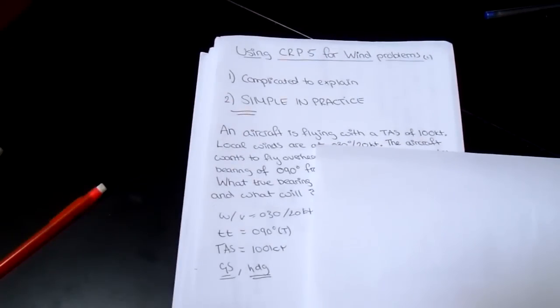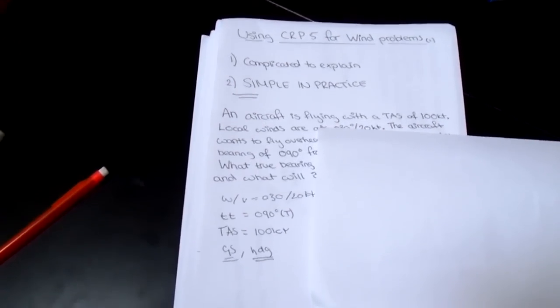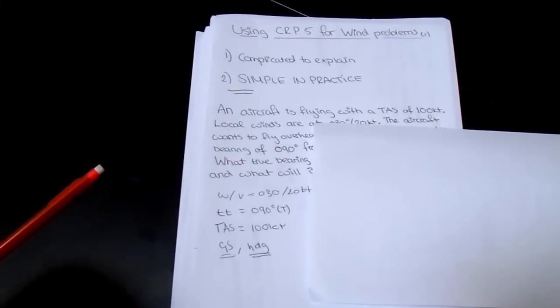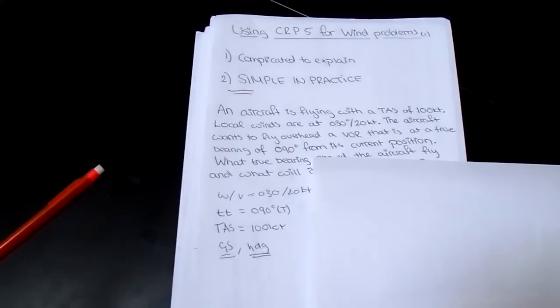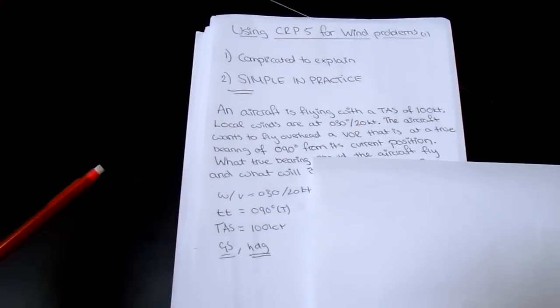So what do I mean by what true bearing should the aircraft fly? I mean, what true bearing should it fly in order to get a true track of 090 degrees to arrive over the VOR? So the first thing is to actually write down the values you need. Let's tilt the camera a bit down.